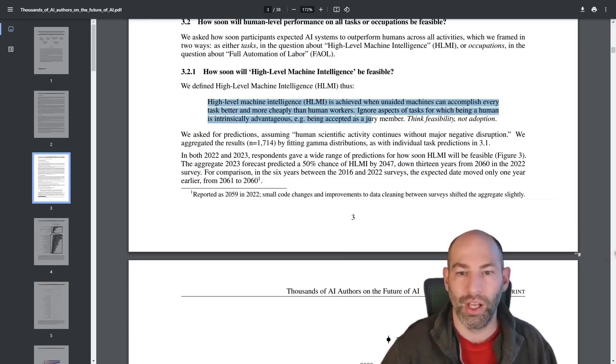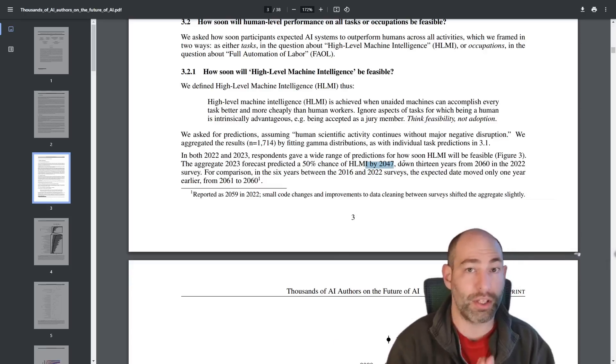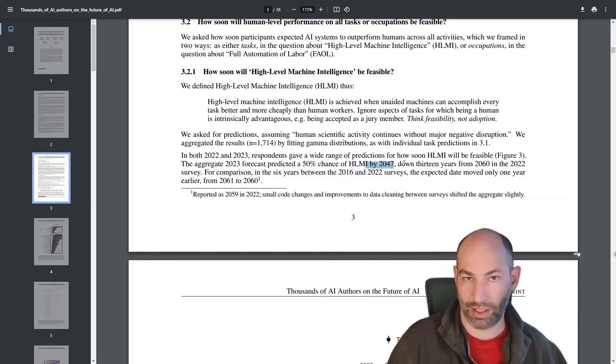Ignore aspects of tasks for which a human being is intrinsically advantageous, such as being accepted as a jury member. Think feasibility, not adoption. In both 2022 and 2023, respondents gave a wide range of predictions. The aggregate forecast of 2023 predicted a 50% chance of HLMI by 2047, down 13 years from 2060 in the 2022 survey. So in the space of one year, all of the so-called experts revised their predictions down by 13 years.